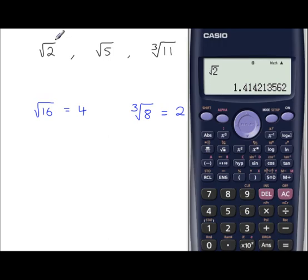If you display the square root of 2 on your calculator, you can see from the decimal that it goes on forever without repeating. Numbers which go on forever without repeating are called irrational numbers. So surds are irrational numbers.